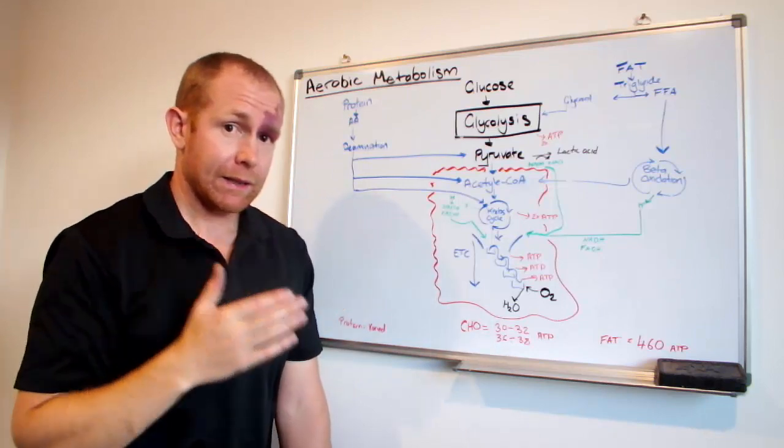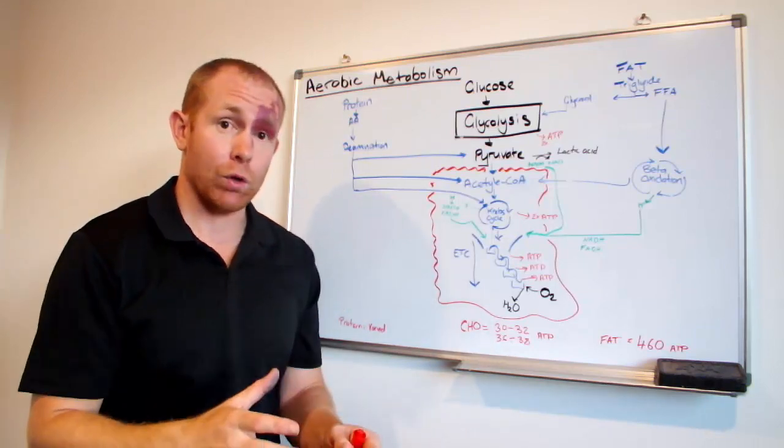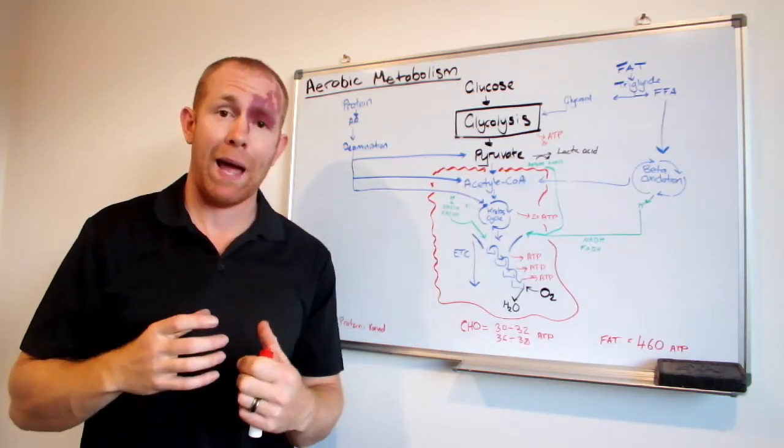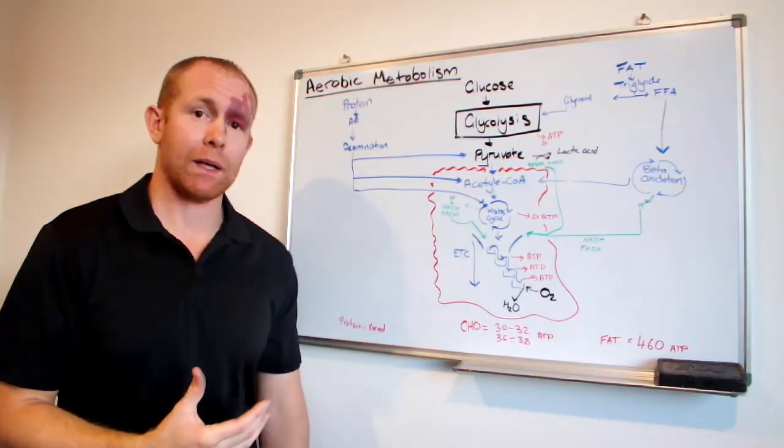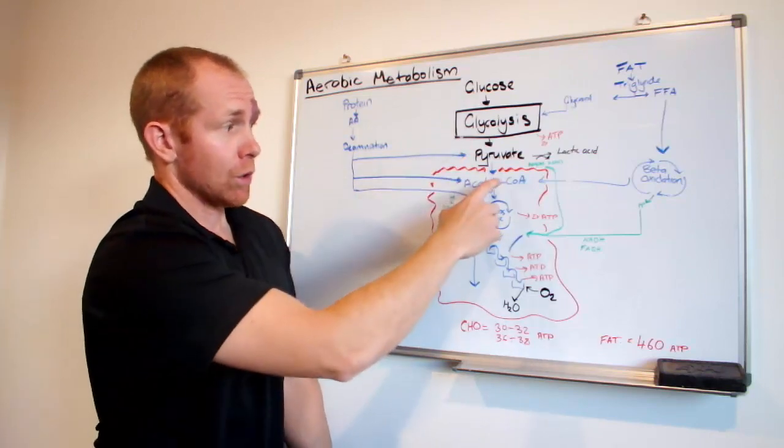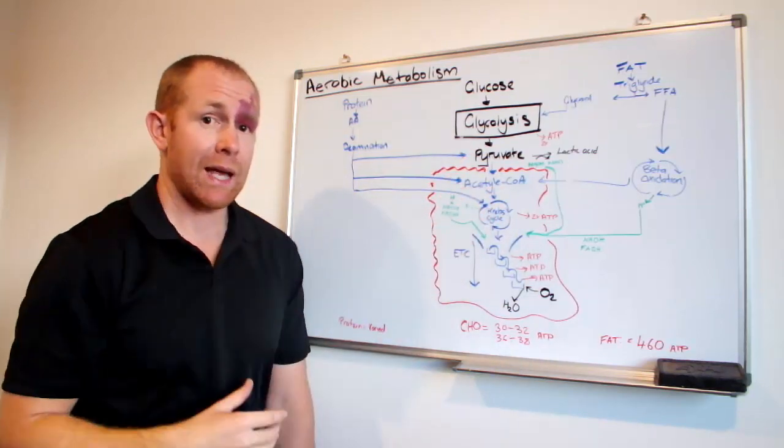So pyruvate goes into the mitochondria. Now the mitochondria are the little power stations of the body. The more of them you have, the more energy aerobically you can produce. So into the muscle, turns into acetyl-CoA.